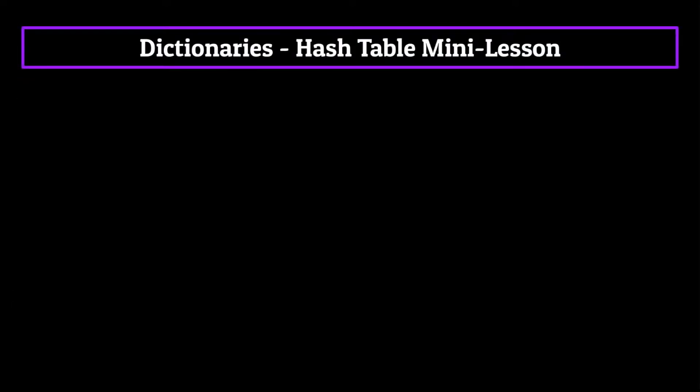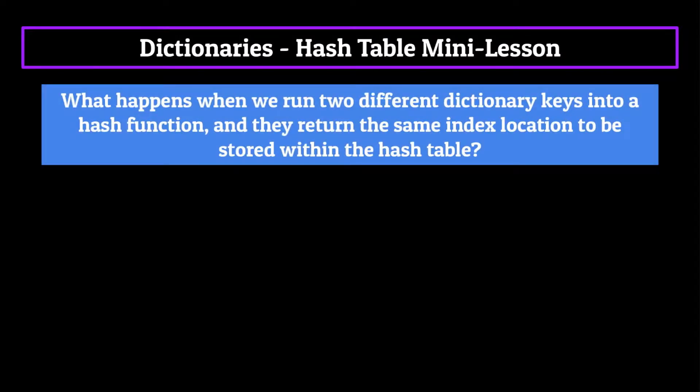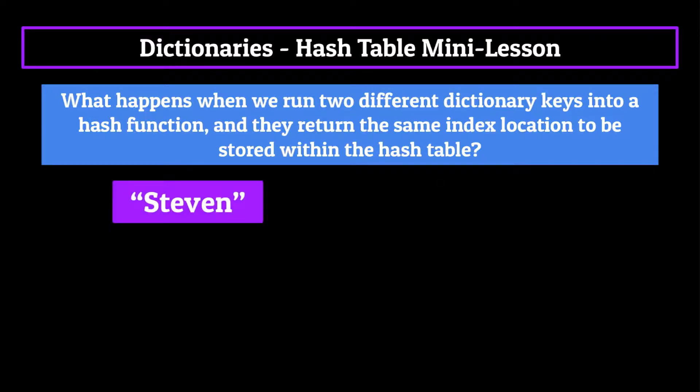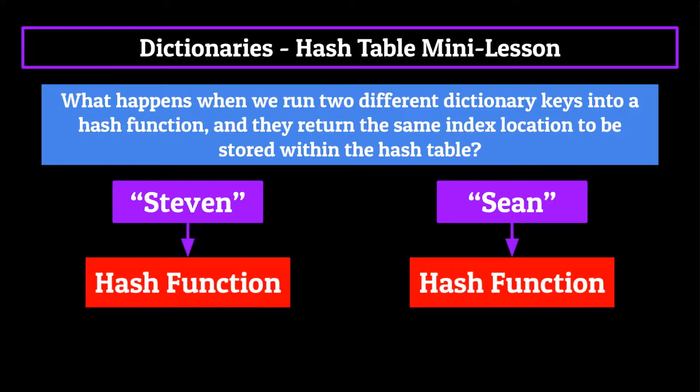Now, the final thing I want to talk about in regards to hash tables, and the reason that dictionary time complexity equations are funky, has to do with one small problem. What happens when we run two different dictionary keys into a hash function, and they return the same index location to be stored at within the hash table? For example, let's say we have two dictionary keys with the strings Steven and Sean. And when we run it through our hash function, it's telling us to put both of them at the ninth index location.